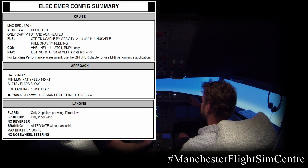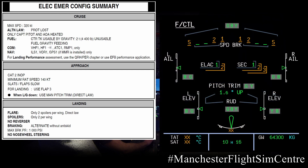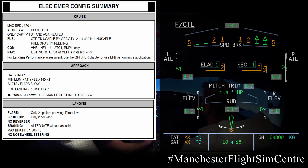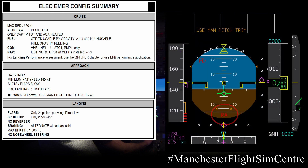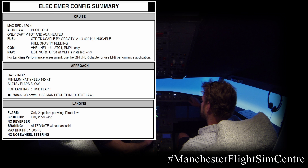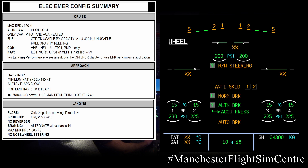Now the landing part of the summary. For flare, only two spoilers are available per wing — three are inoperative — plus the ailerons on each side. Both rad-alts are inoperative, so flare cues may not be there; call-outs could be made by the pilot monitoring. For deceleration: no reversers. For braking, we are on alternate without anti-skid, and max brake pressure should be modulated to 1000 psi. Finally, due to loss of both BSCUs, we have no nose wheel steering.